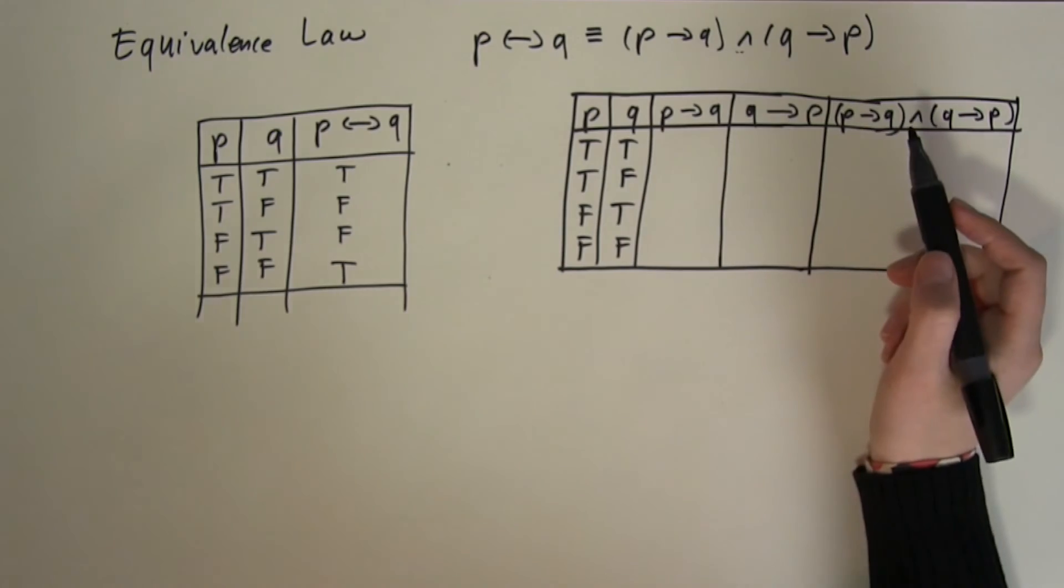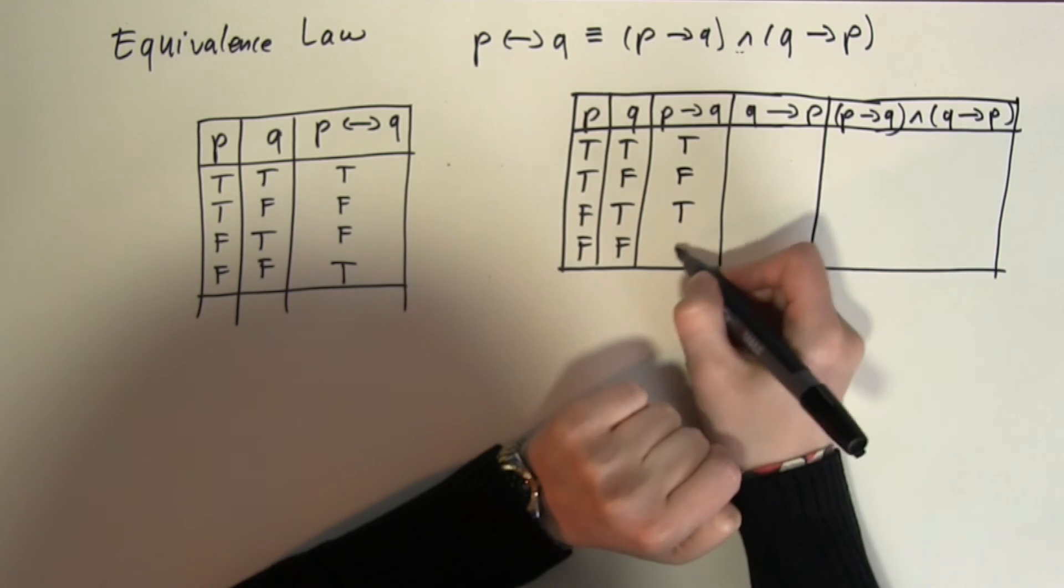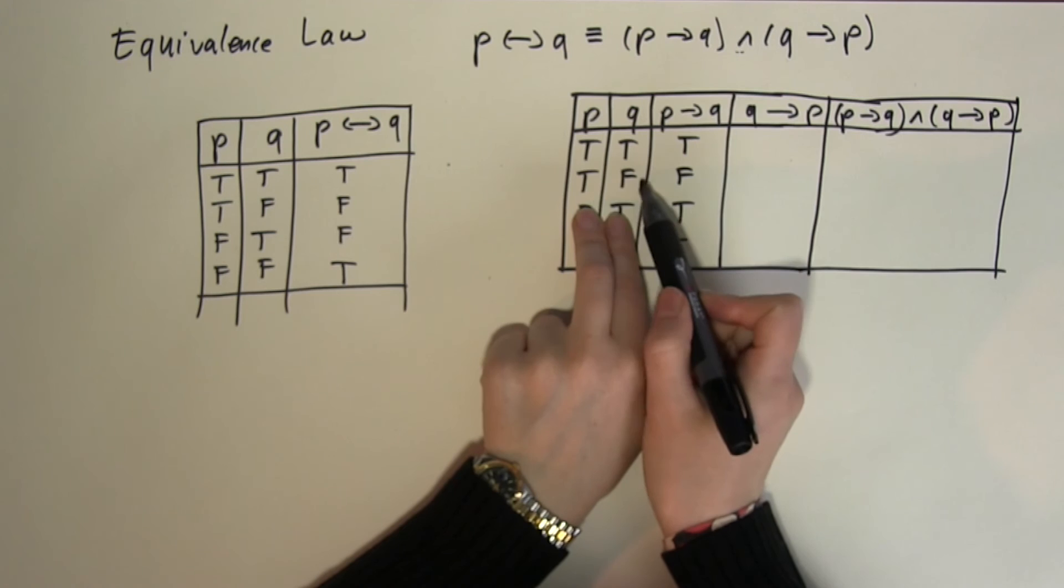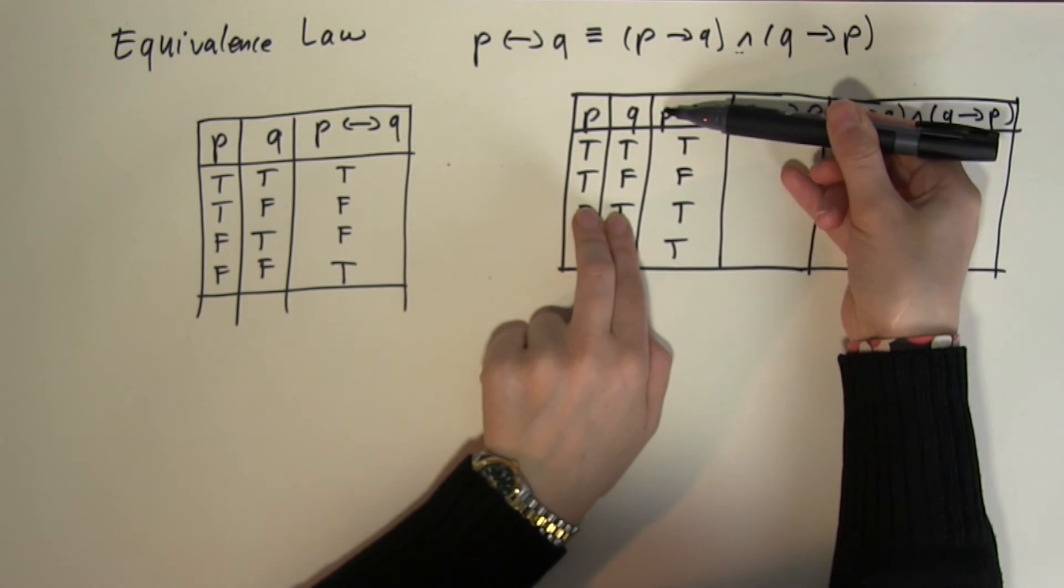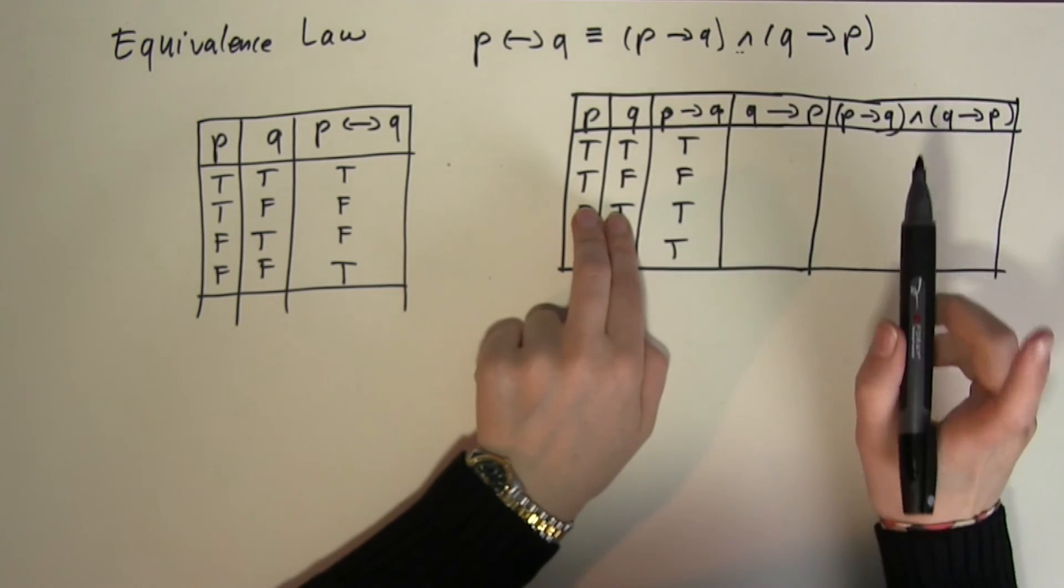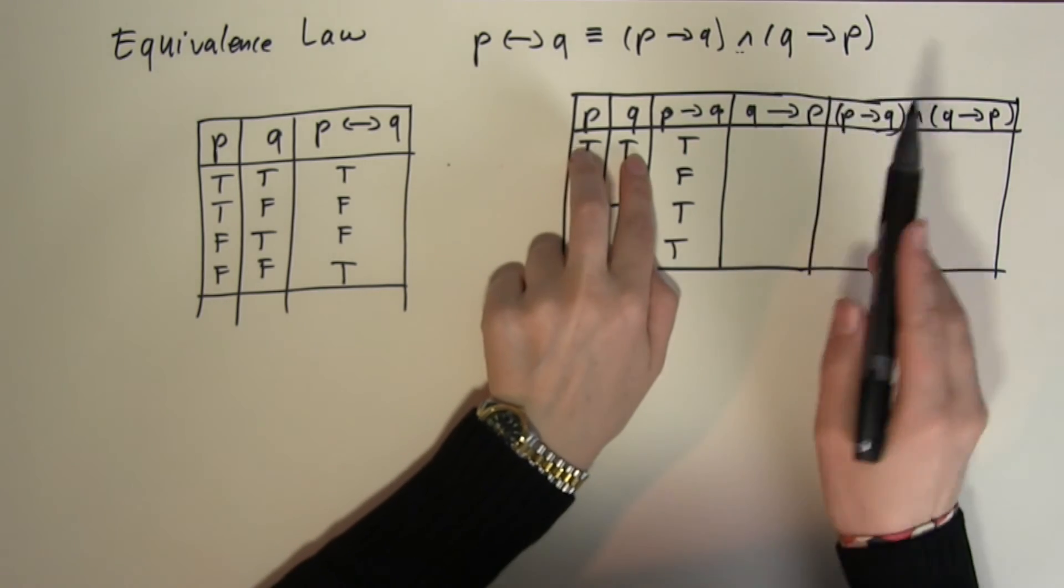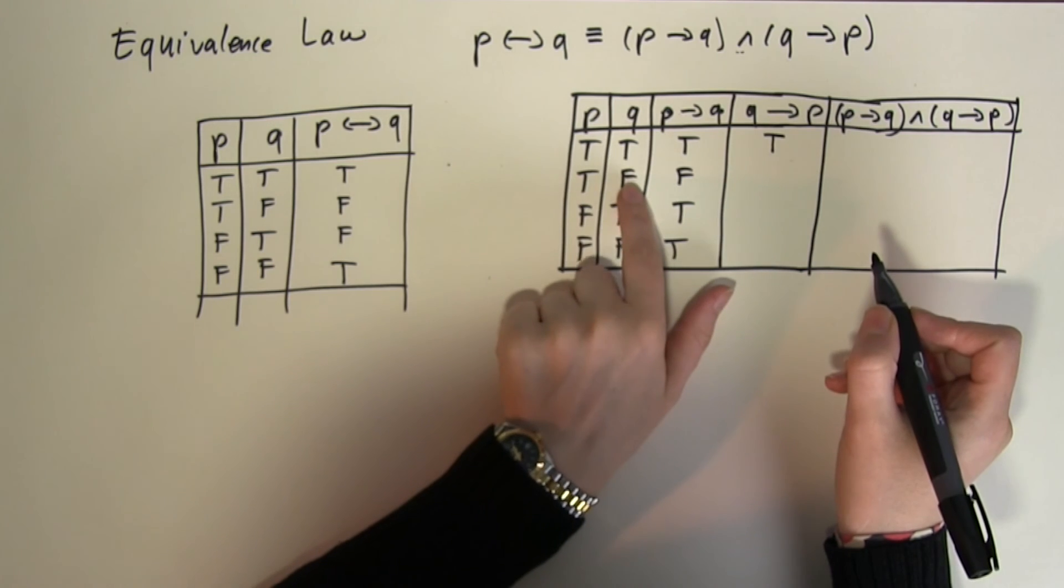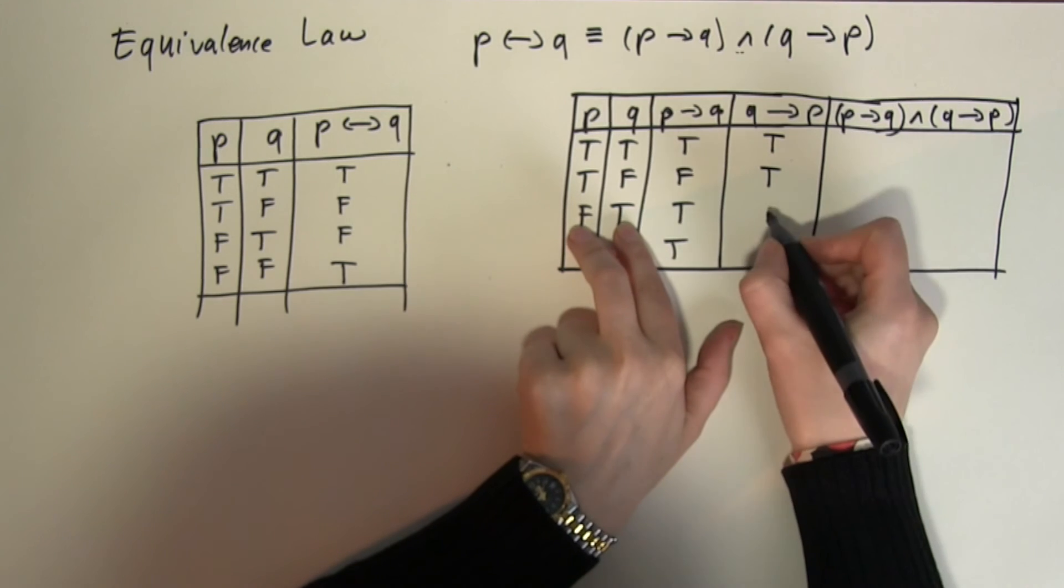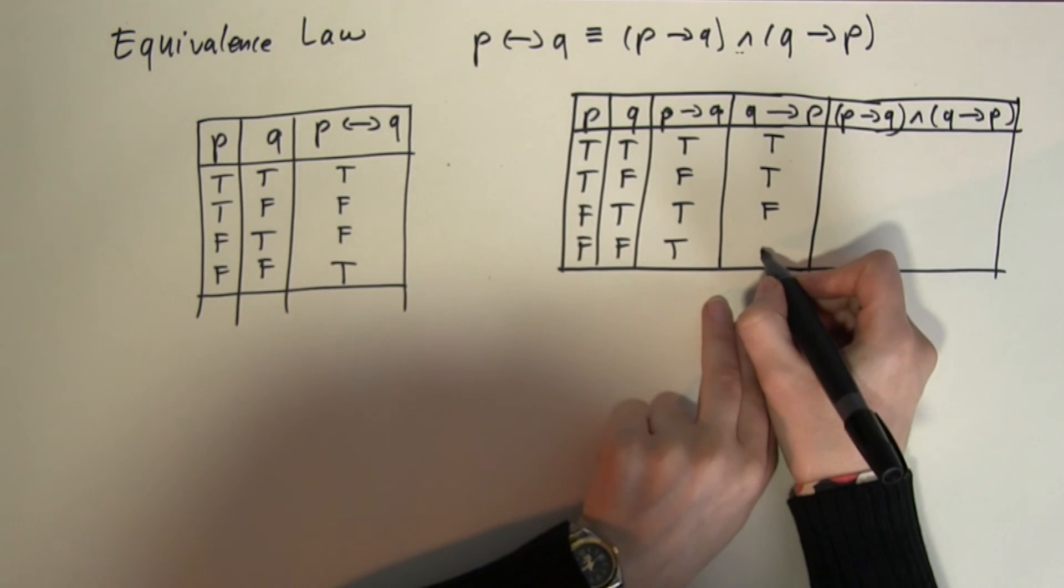So P if then Q remember is the same as we looked at before, only turns false with this input. When the first is true but the second is false, that's when the if then returns a false. Now how are we going to look in the opposite way? Right, true implies true that's true. False implies true is true but true does not imply false. So this will give us the false and false implies false is true again.